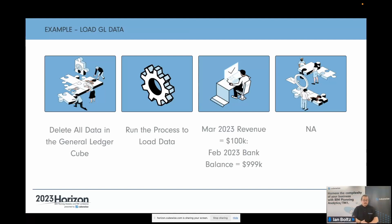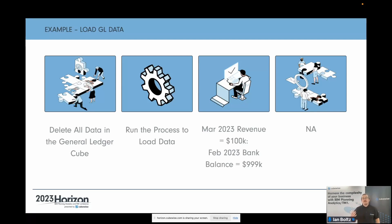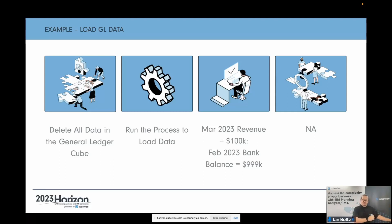An example of a general ledger load: we clear out the general ledger cube — start from a fresh empty cube — and run our process to load data. The expected outcome, because we know from the business and we've looked at the raw data, is revenue in March 2023 is going to be 100,000 and the bank balance in February is going to be 999. We're not doing a cleanup because the loaded data is the state we want the model to be in.